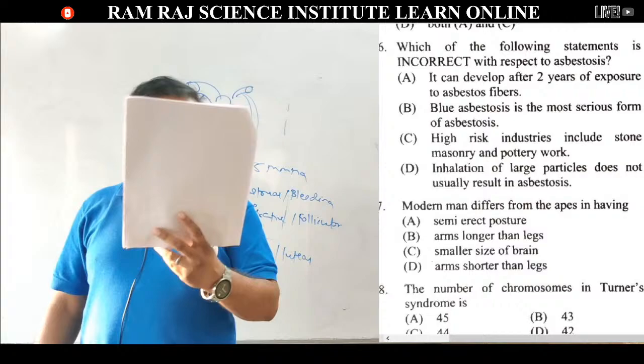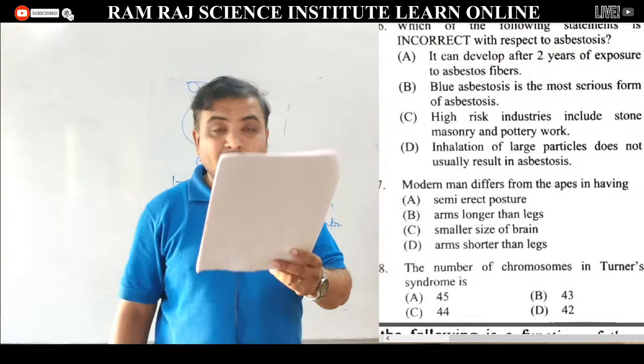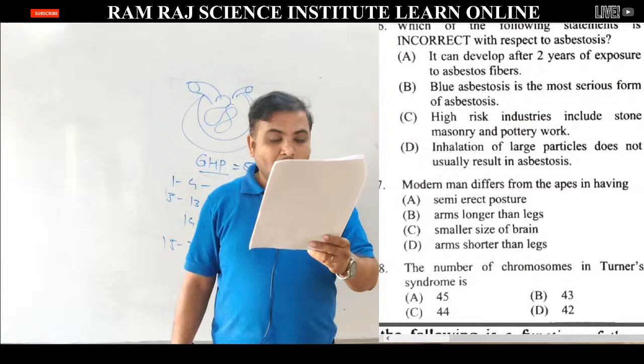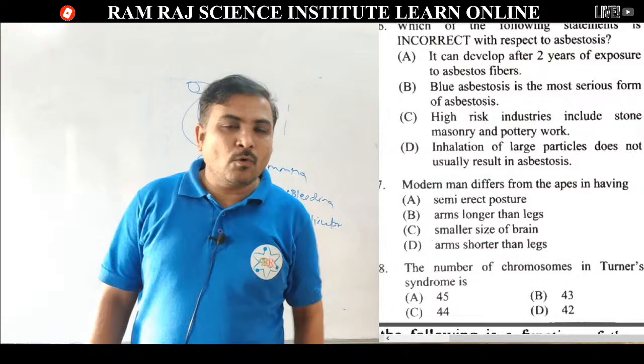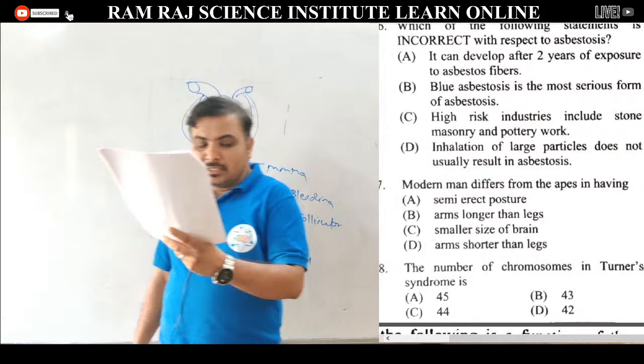Question 87: modern man differs from apes in having. Semi erect posture — नहीं, modern man का posture fully erect है. Arms longer than legs — नहीं. Smaller brain — नहीं. Arms shorter than legs — yes, यह right है. Apes में arms legs के comparison में longer थे. Modern man में arms shorter than legs होती हैं. Correct answer is option D.